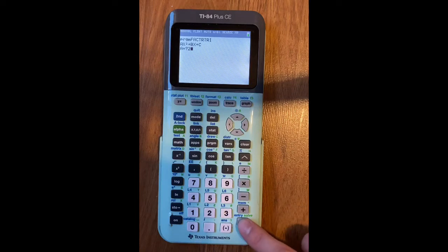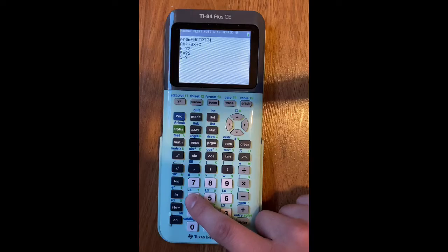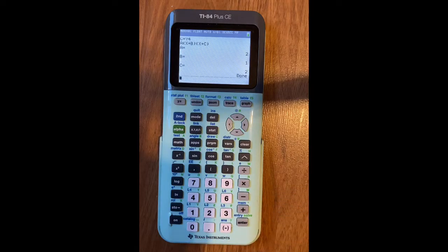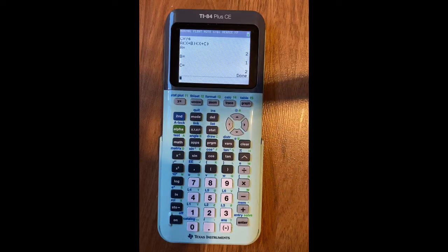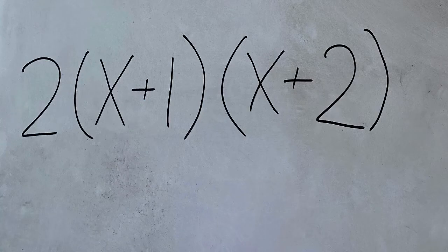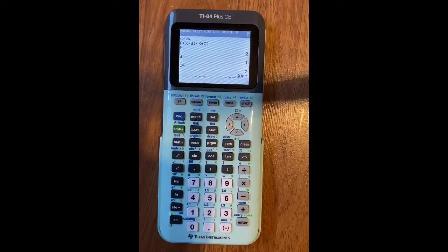So for A, you're going to put in 2. For B, you're going to put in 6. For C, you're going to put in 4. Then it should give you a 2, a 1, and a 2. Basically, that will look like this. If you plug in all of the numbers, it should look like this as your factored version of it.